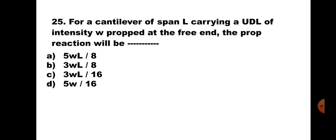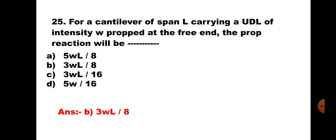Question number 25. For a cantilever of span L carrying a UDL of intensity W, propped at the free end, the prop reaction will be: A. 5WL/8, B. 3WL/8, C. 3WL/16, D. 5W/16. Props are provided to avoid excessive deflection at the free end due to longer span or heavier loads. This is the standard case where a cantilever carries a UDL on the entire span and a prop is provided at the free end. The prop reaction is 3WL/8. Hence, the correct answer is B. 3WL/8.